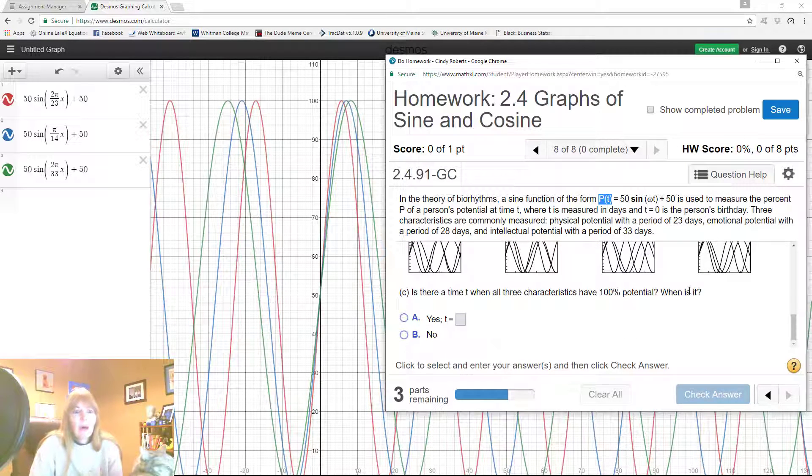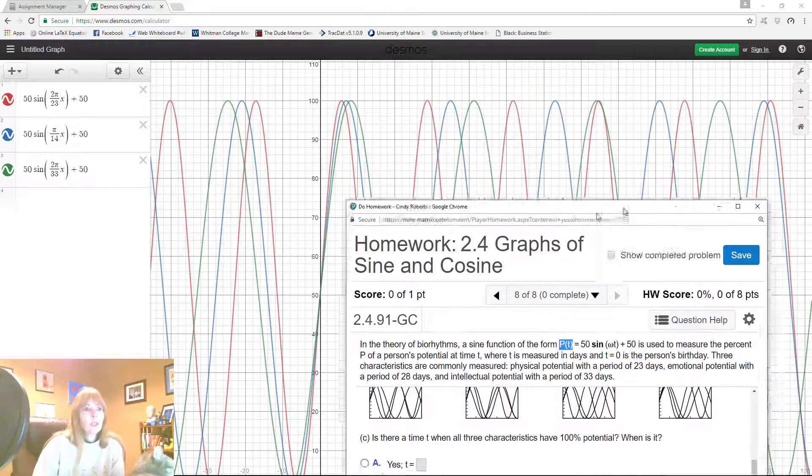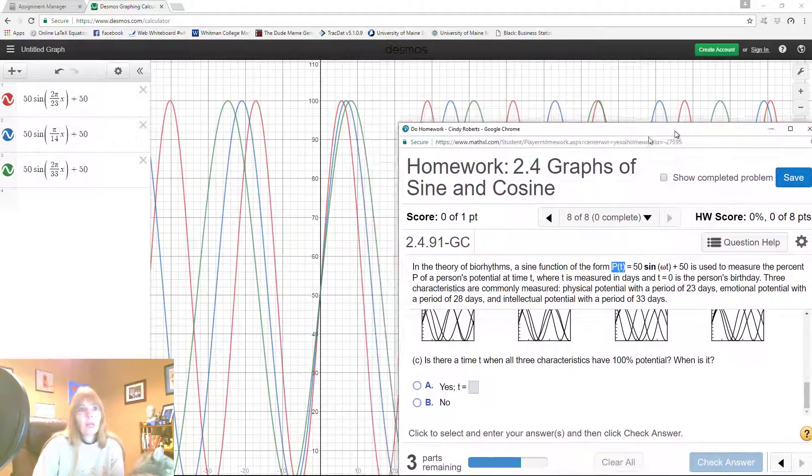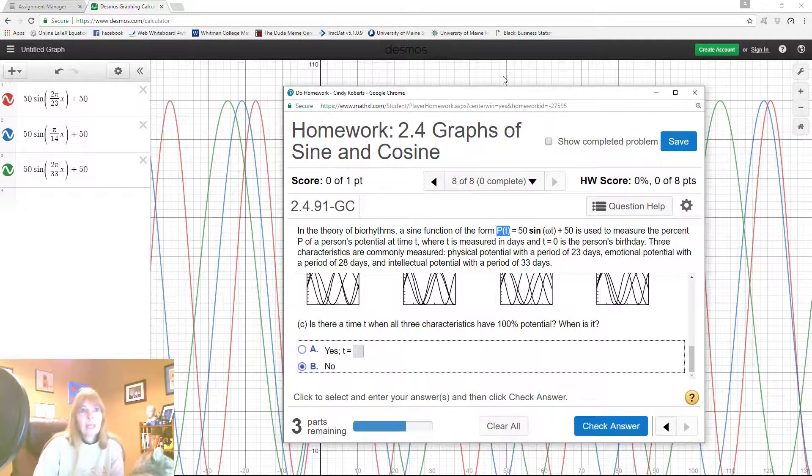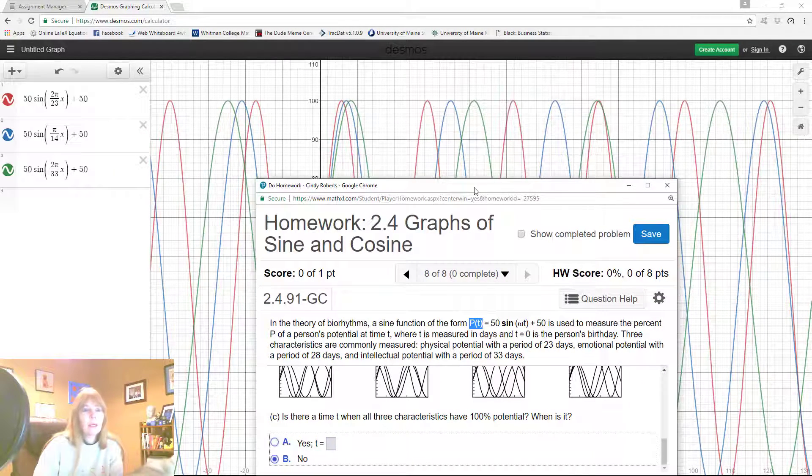All right, is there a time when they all have a hundred percent? So in other words, do they all hump in one place? No. So there's not a time that the max, okay, the top of these humps are all identical, so that'd be a negatory. Excellent.